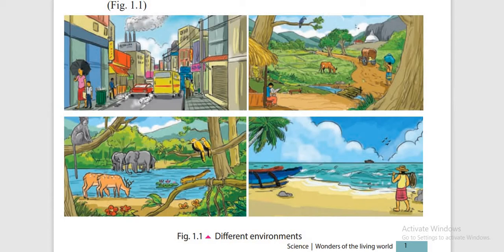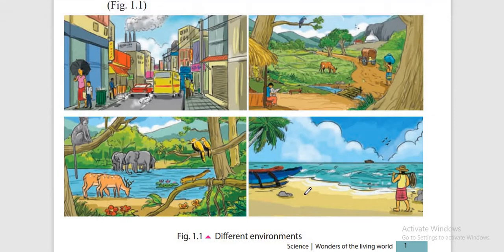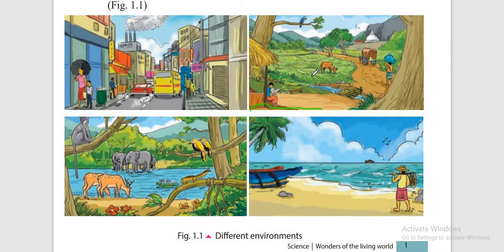Among these four different environments, which environment is suitable for living for human beings? We will choose our villages. Villages are the best place to live because there are no pollutants. It's full of fresh air, pure water and clean air.